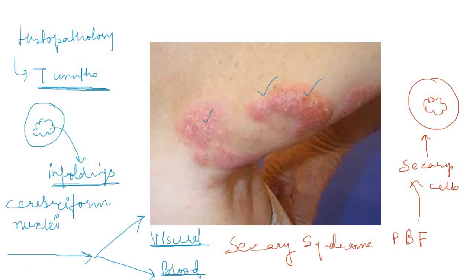Regarding survival: patients with limited mycosis fungoides where the disease is confined to the skin have a survival rate of many years — like five to ten years. But in patients where mycosis fungoides has disseminated and produced Sézary syndrome, the survival rate decreases and the median survival is approximately one to three years.